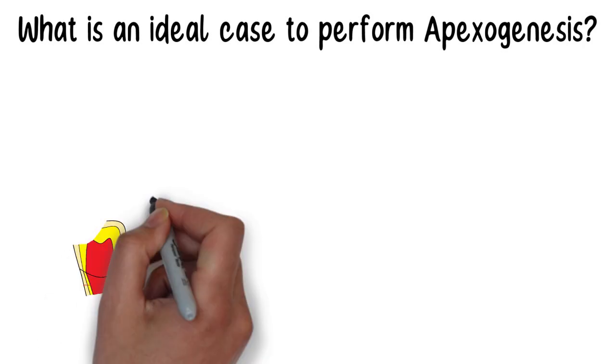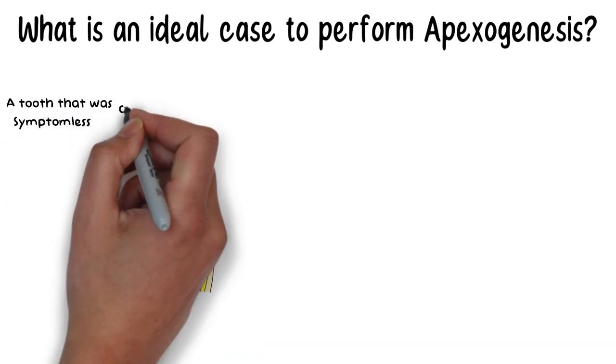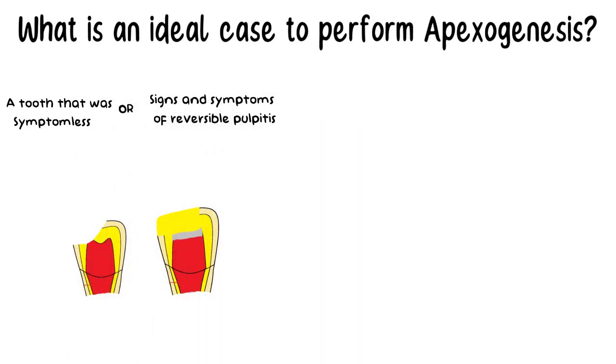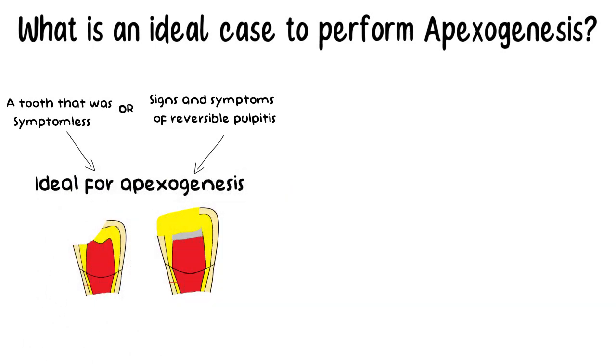A tooth having an open apex which was symptomless before the exposure or had mild signs and symptoms of reversible pulpitis is the ideal tooth that should be treated with Apexogenesis. Because the pulp in reversible pulpitis can be reversed back to normal state if the cause of inflammation is removed.